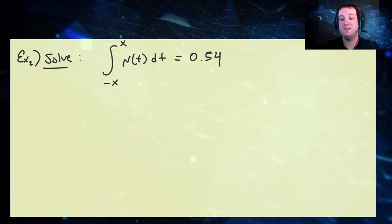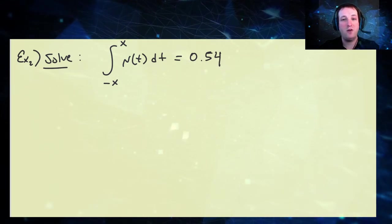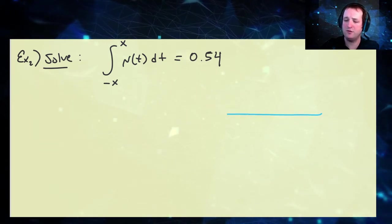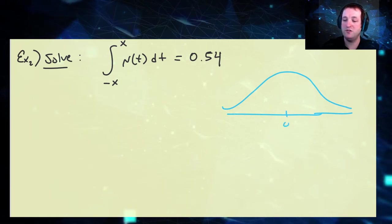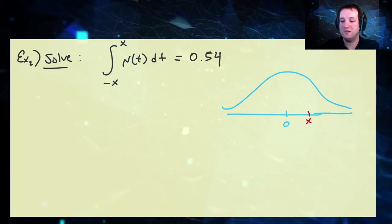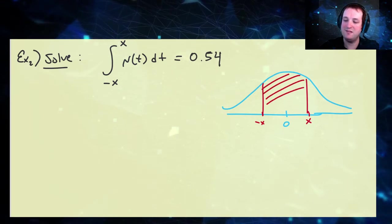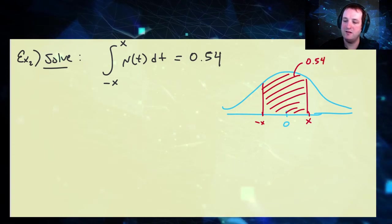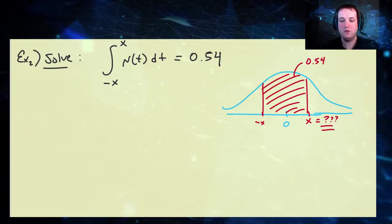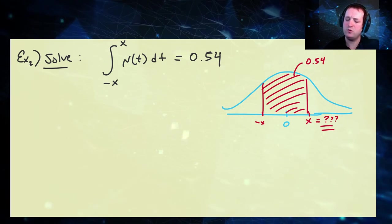Let us consider another example: the integral from minus x to x of the standard normal distribution with respect to t equals 0.54. What value of x will make this integral equation true? Looking at this from the graphical perspective, the standard normal distribution is symmetrically distributed around 0. If x is some distance to the right, then minus x is the same exact distance to the left. So we want to find an area symmetrically distributed around the mean equal to 0.54, and if we find x we automatically know minus x.